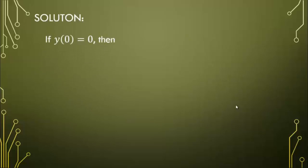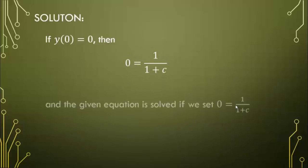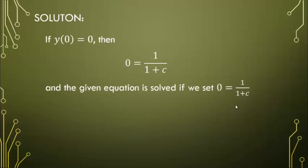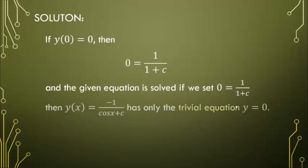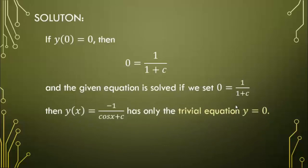If y(0) = 0, then 0 = 1/(1 + C). Then y(x) = −1/(cos(x) + C), as only the trivial solution y = 0 satisfies this condition.